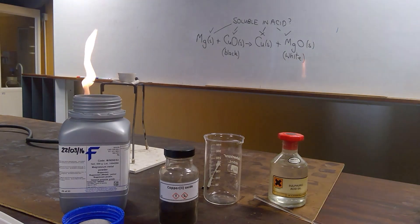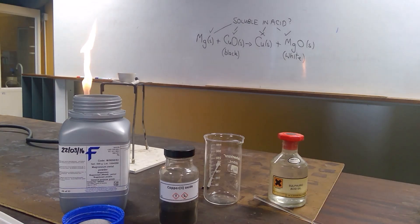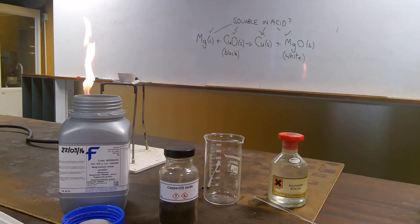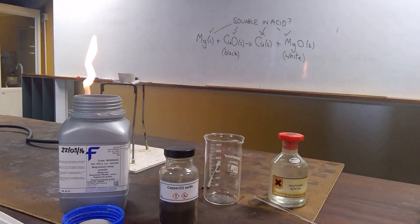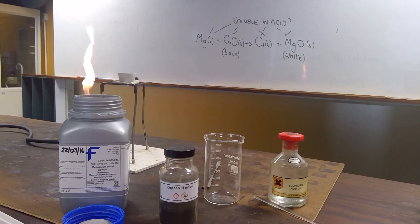Copper oxide is a black solid. The reaction between these two solids does not occur until sufficient energy is given to the particles so that they are in sufficiently rapid motion with high enough energy for a chemical reaction to occur.